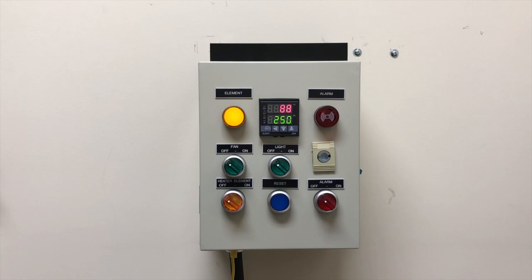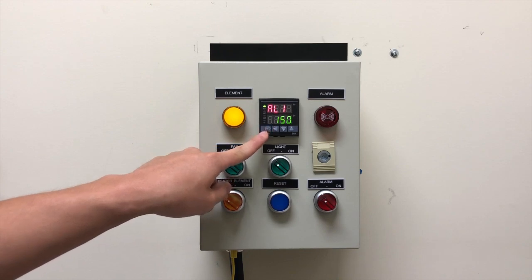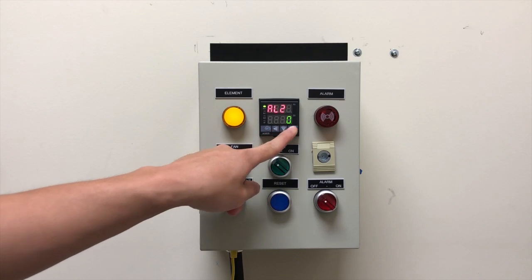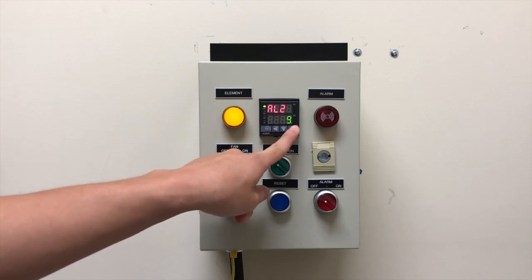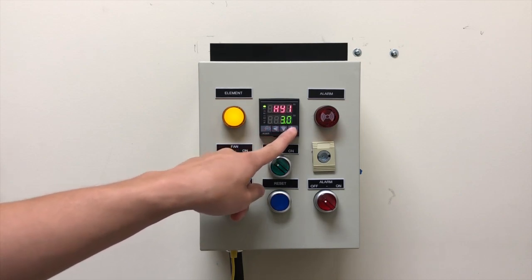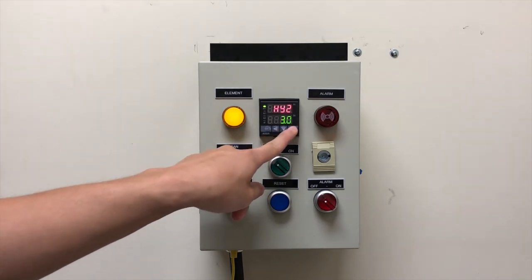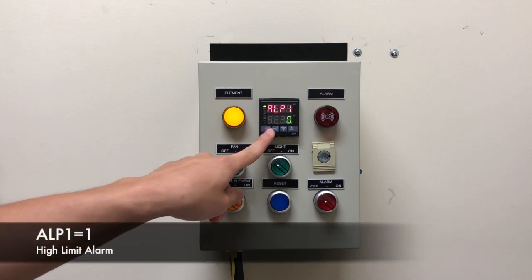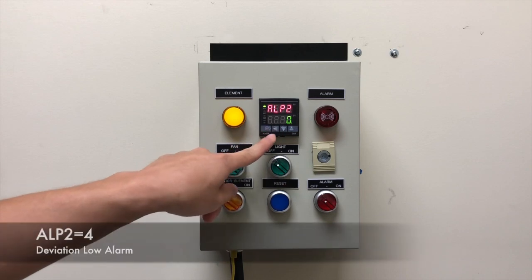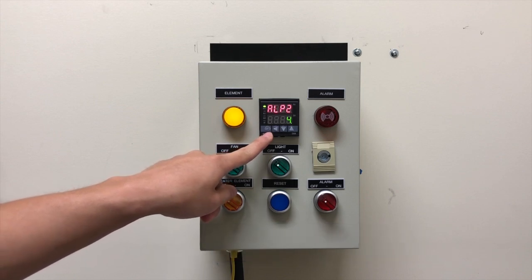Next I am going to go into my parameter editing profile. I want to change AL1 to 250, AL2 to 10, HY1 to 5, HY2 to 5, ALP1 to 1 which will make alarm 1 a high limit alarm, and ALP2 to 4 which will make alarm 2 a low deviation alarm.